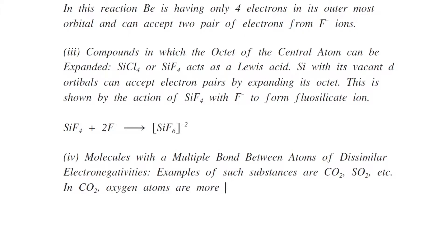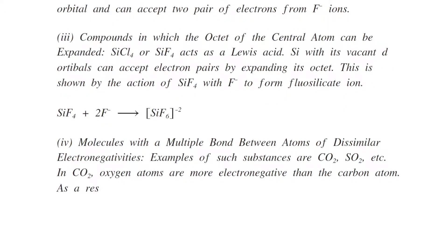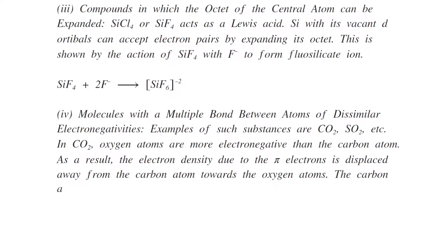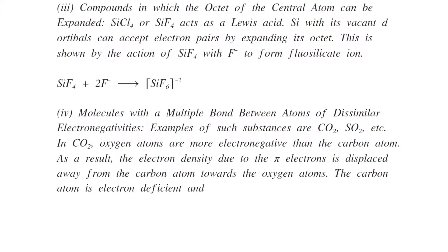In carbon dioxide oxygen atoms are more electronegative than the carbon atoms. As a result the electron density due to the pi electrons is displaced away from the carbon atom towards the oxygen atoms. The carbon atom is electron deficient and can accept electron pair from a Lewis base.